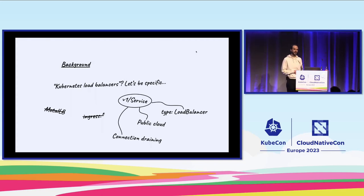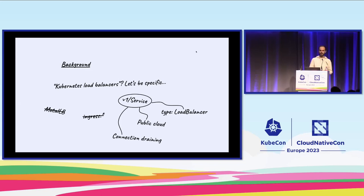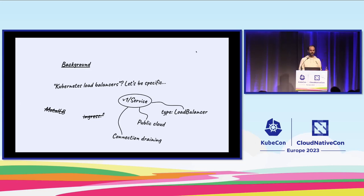This doesn't have any relation to bare metal nodes or MetalLB for those of you aware of that project. It doesn't have anything to do with the Ingress class or any of the Gateway API that has been presented here at KubeCon either. Specifically, what this aims at solving is a problem around the core v1 Service object.